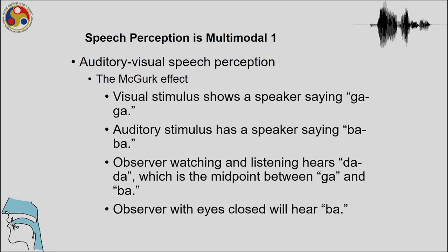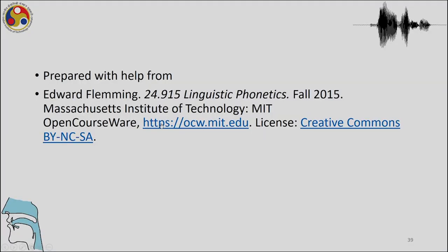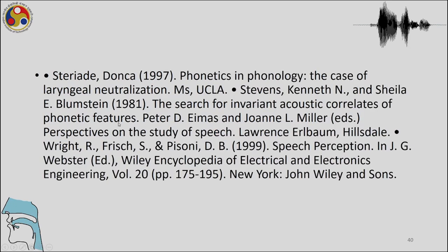However, if the eyes are closed then the speaker hears what is actually said, because there is no clash with the visual medium. So the speaker says 'ba ba', the lips say 'ga ga', what is played is 'ba ba', but the perception is 'da da'. We have used some information from the MIT courseware on linguistic phonetics and some papers to prepare these slides.